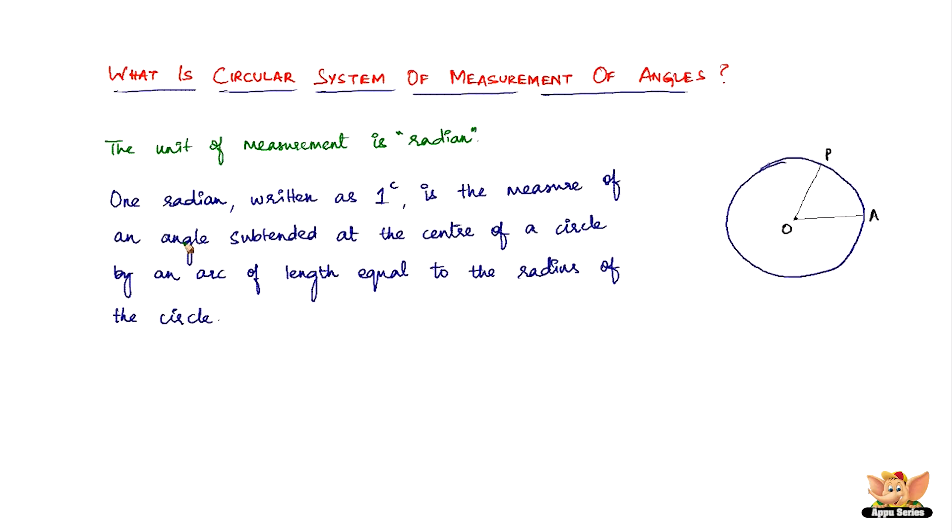Here we've got the definition of what is the radian. One radian written as 1^c is the measure of an angle subtended at the center of a circle. Here is the measure of this angle, angle AOP or angle POA, which is subtended at the center of the circle by an arc equal to the length of the radius of the circle.